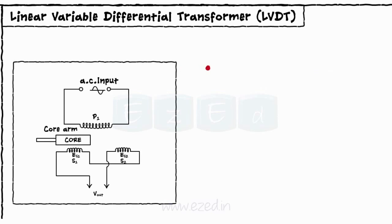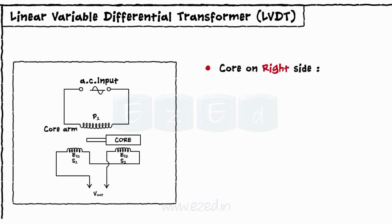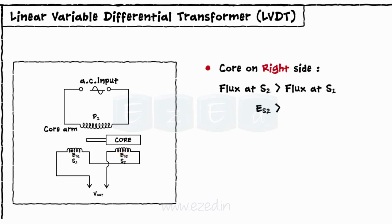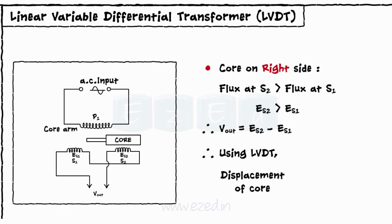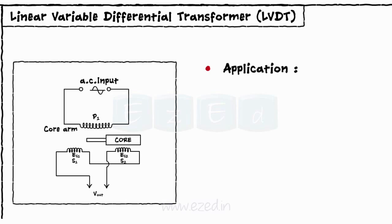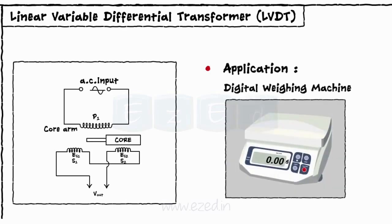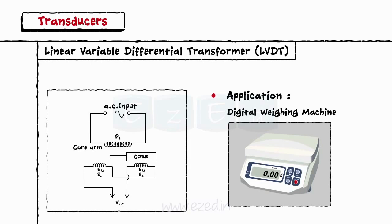Thus, using LVDT, the displacement of a core is converted into an equivalent electrical signal. Similarly, when the core shifts towards secondary winding S2 due to displacement, more magnetic flux gets linked to coil S2 than S1. Hence, the EMF induced in coil S2, ES2, is more than ES1. Thus, the output becomes Vout equals ES2 minus ES1. Using LVDT, the displacement of a core is converted into an equivalent electrical signal. LVDT is commonly used in digital weighing machines, along with a load cell, which we will see shortly.